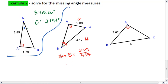Because I'm solving for B, I'm going to use sine inverse or arc sine. Plug it into my calculator as sine inverse of 2.09 divided by 4.17. And I get 30.08 degrees.